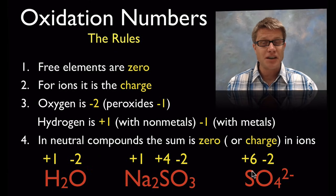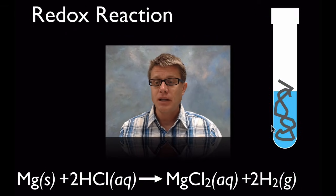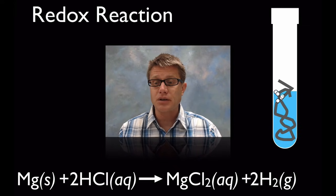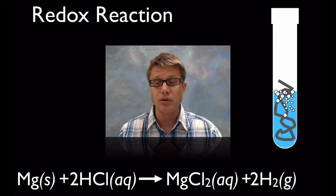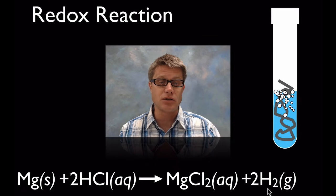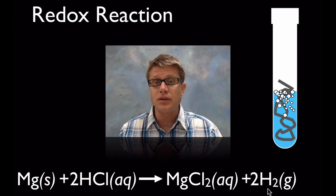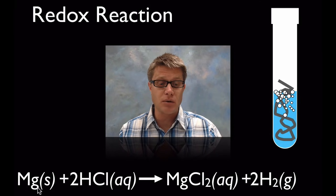Let's look at a redox reaction: magnesium solid put into hydrochloric acid. You're going to see bubbles show up — those are hydrogen gas — and this is a redox reaction. We can go through this reaction and write down the oxidation numbers. Starting with magnesium: it's all by itself, so its oxidation number is 0.